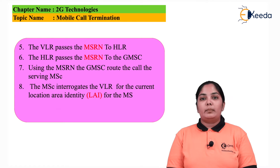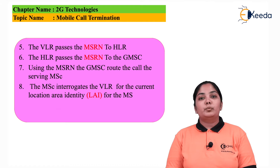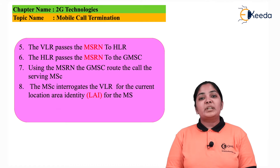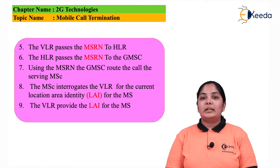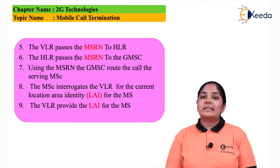The MSC, on the eighth step, will interrogate the VLR and find out the Location Area Identity, or LAI number, of the mobile phone. This number tells us in which cell the mobile phone is active. In the ninth step, the VLR will return the Location Area Identity of the mobile station — this is the location where the mobile phone is active.